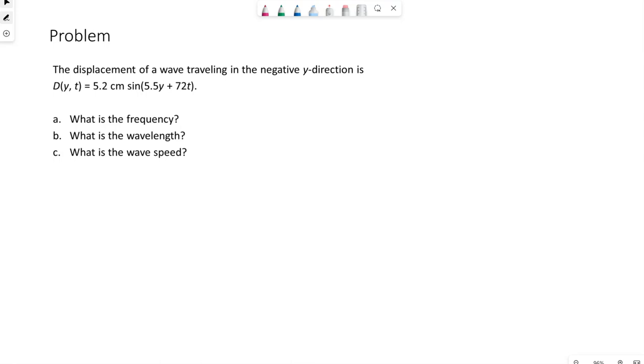We have an example problem here. The displacement of a wave traveling in the negative y direction is D(y,t) equals 5.2 centimeters sine of 5.5y plus 72t. We want to find the frequency, the wavelength, and the wave speed.